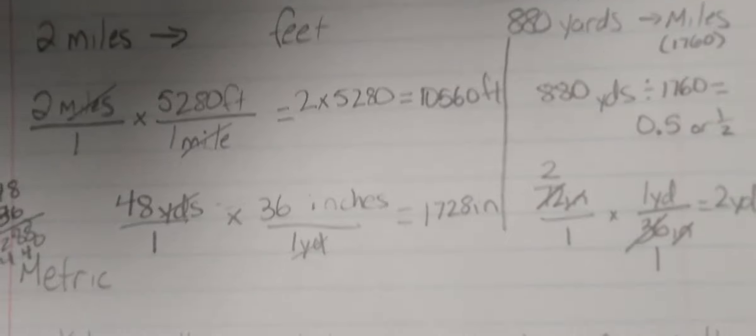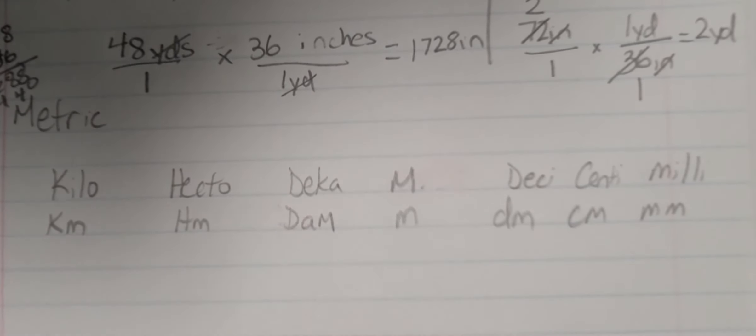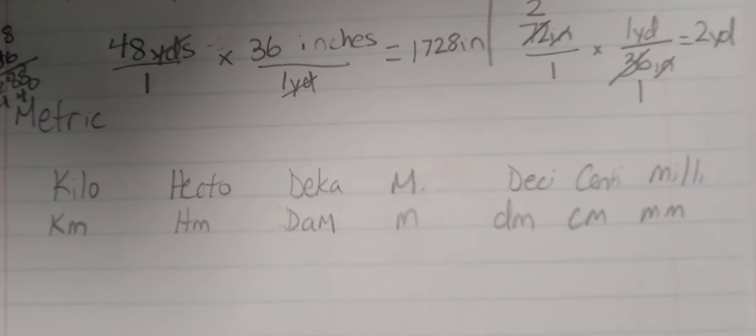Alright. Now, the metric system. The metric system is a lot easier because the metric system is the same for every type of measurement.